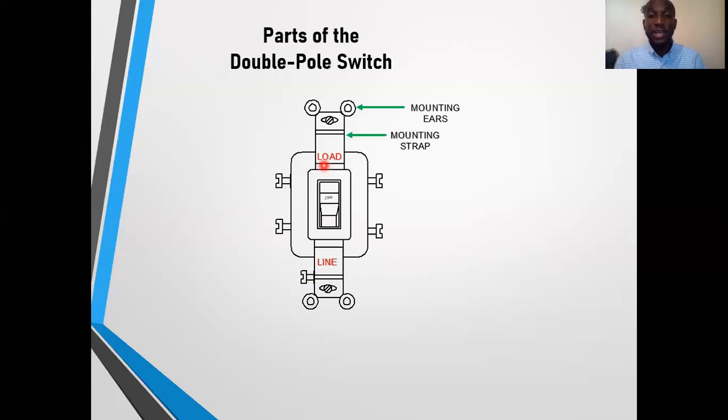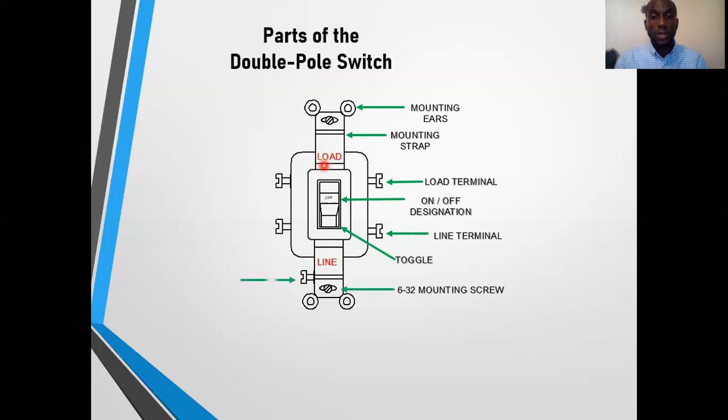As said before, this double-pole switch is similar to the single-pole switch only that it has four terminals. Parts are similar: the mounting ears, the mounting strap, we have a load terminal, we have the on or off designation, we have a line terminal, we have the toggle, we have the 6-32 mounting screws, there's also the grounding terminal, then you have the balancing line terminal, and to complete it all we have the balancing load terminal. As you can see, both load terminals are across from each other. Both line terminals are across from each other.